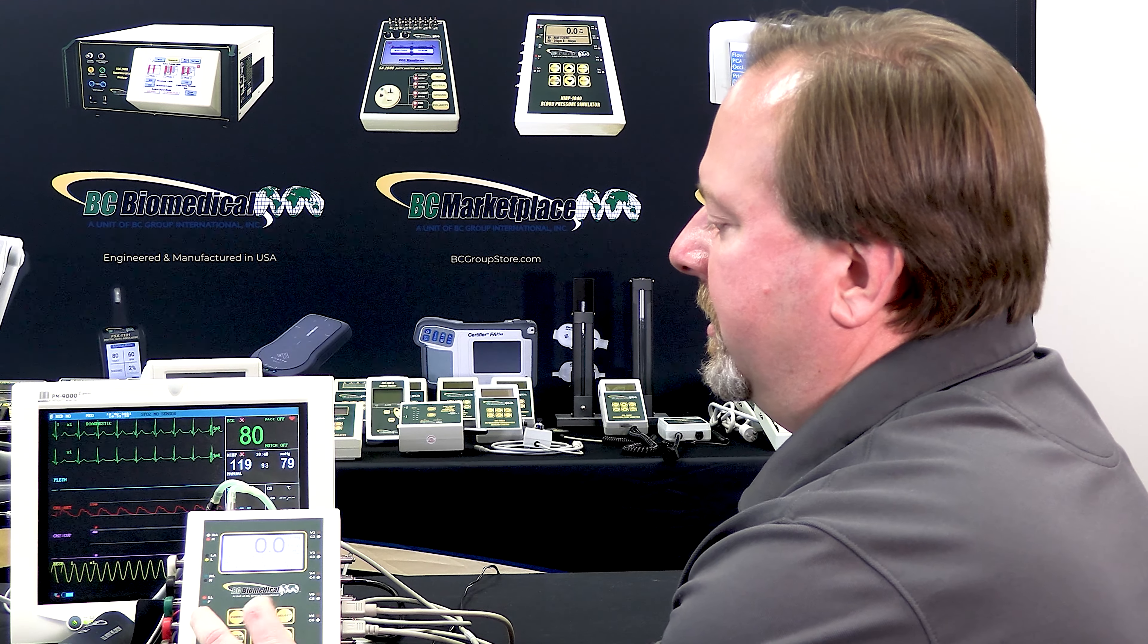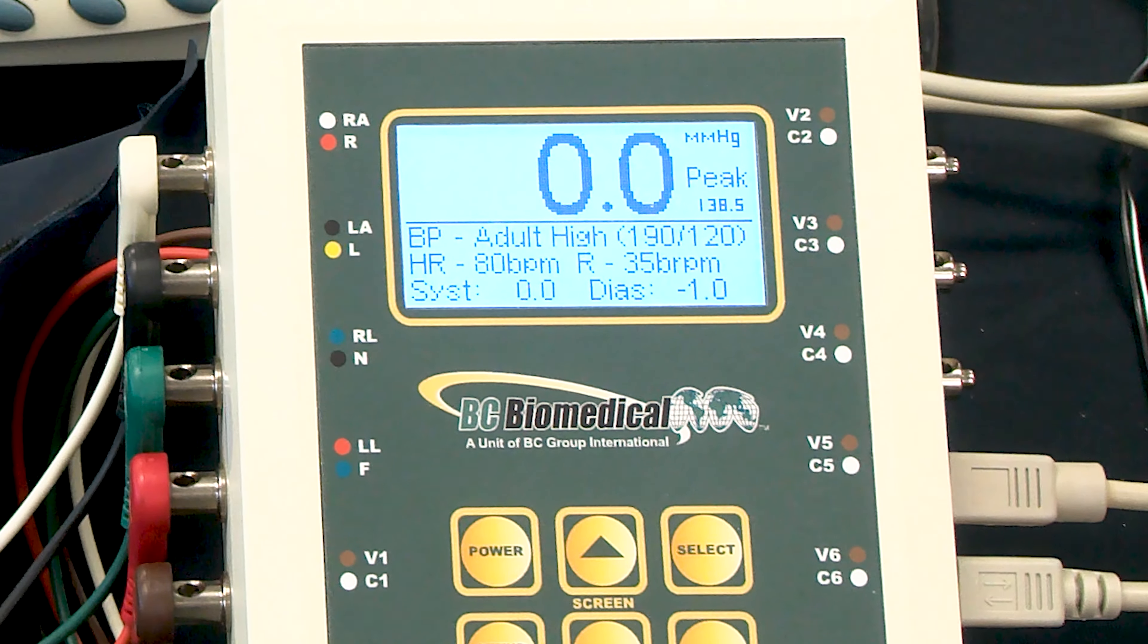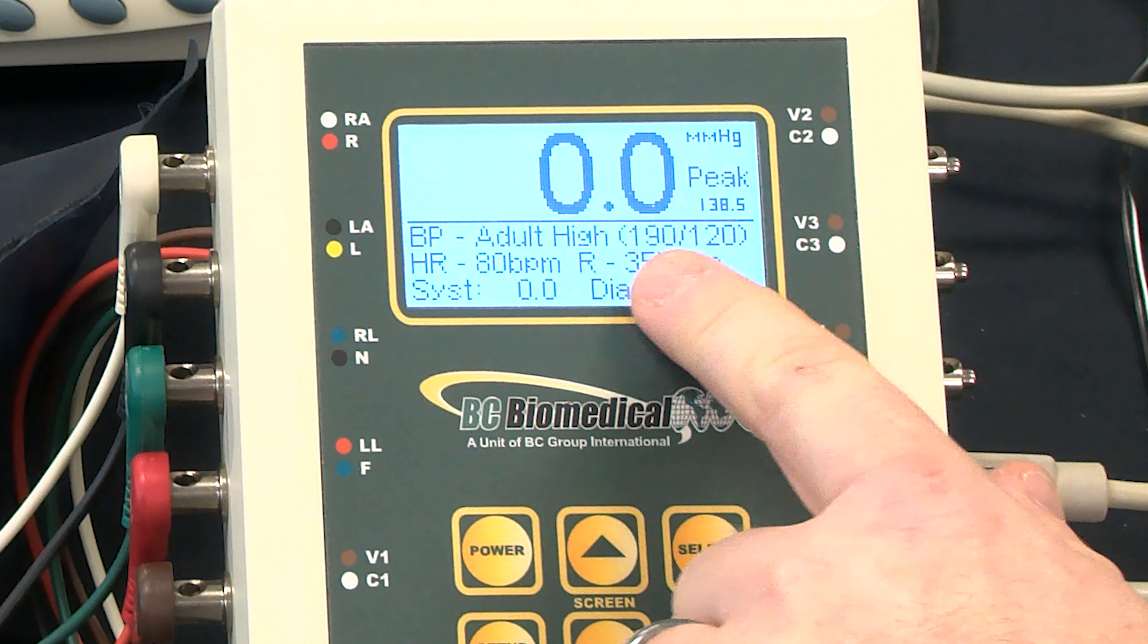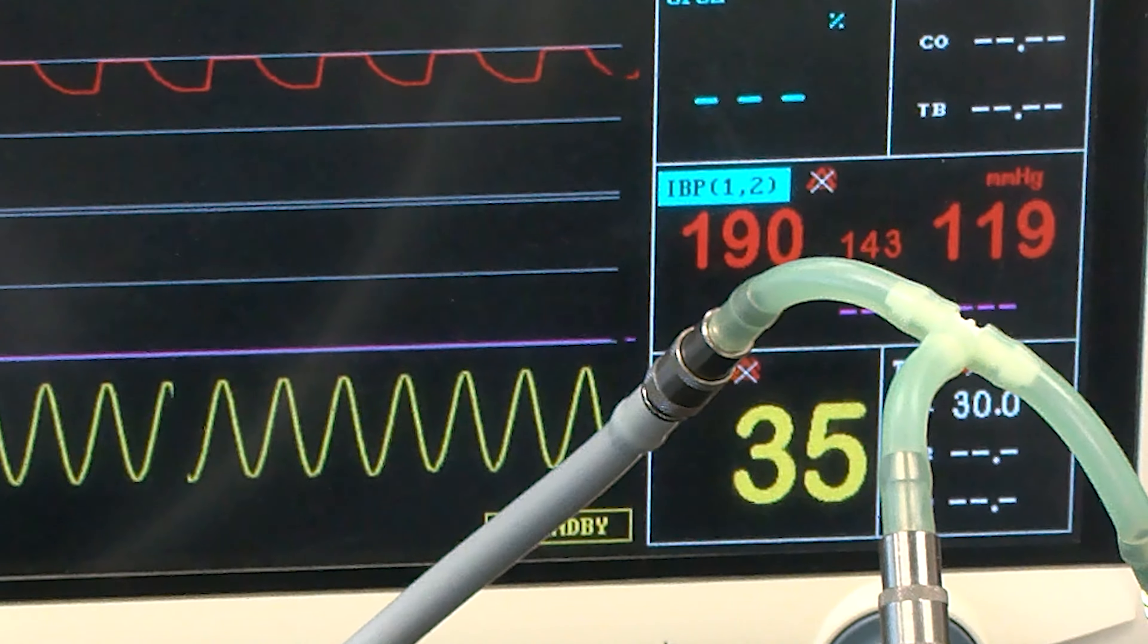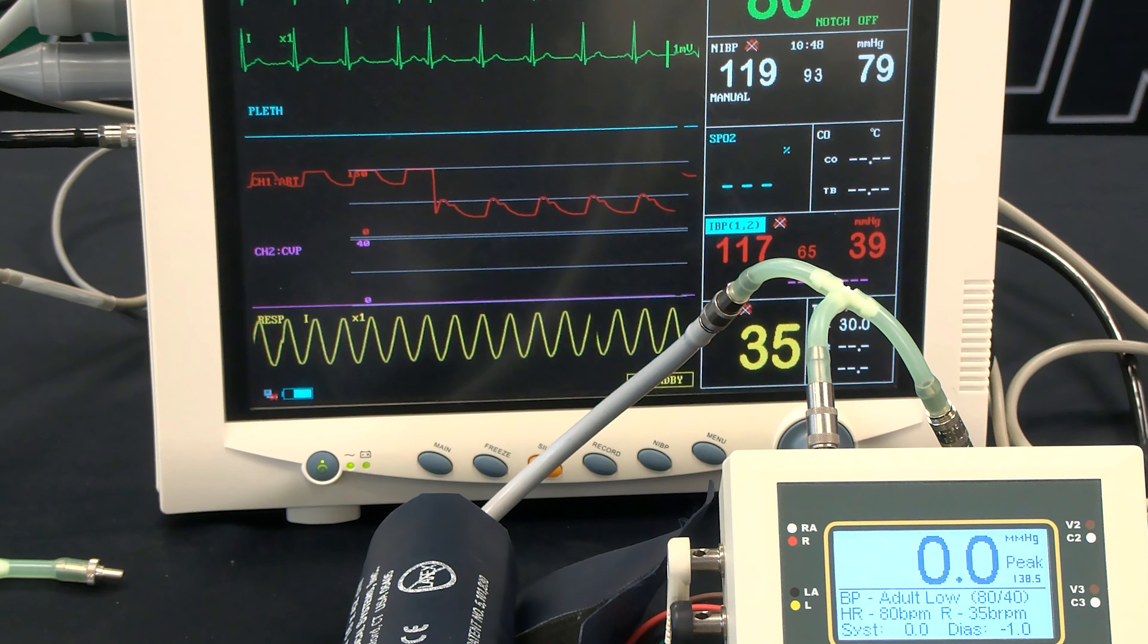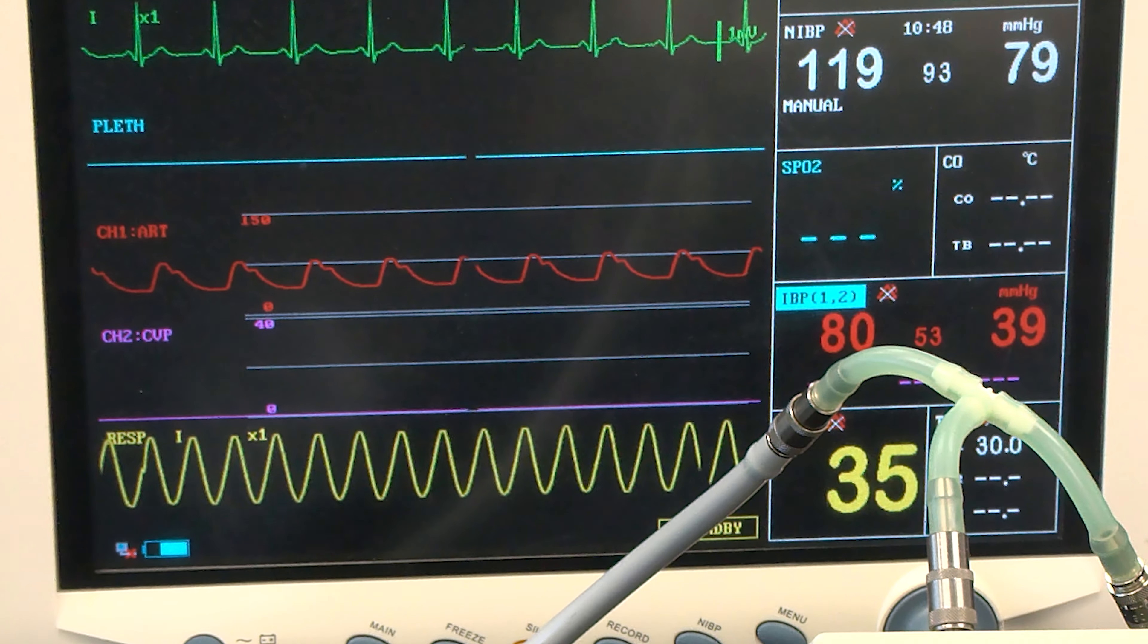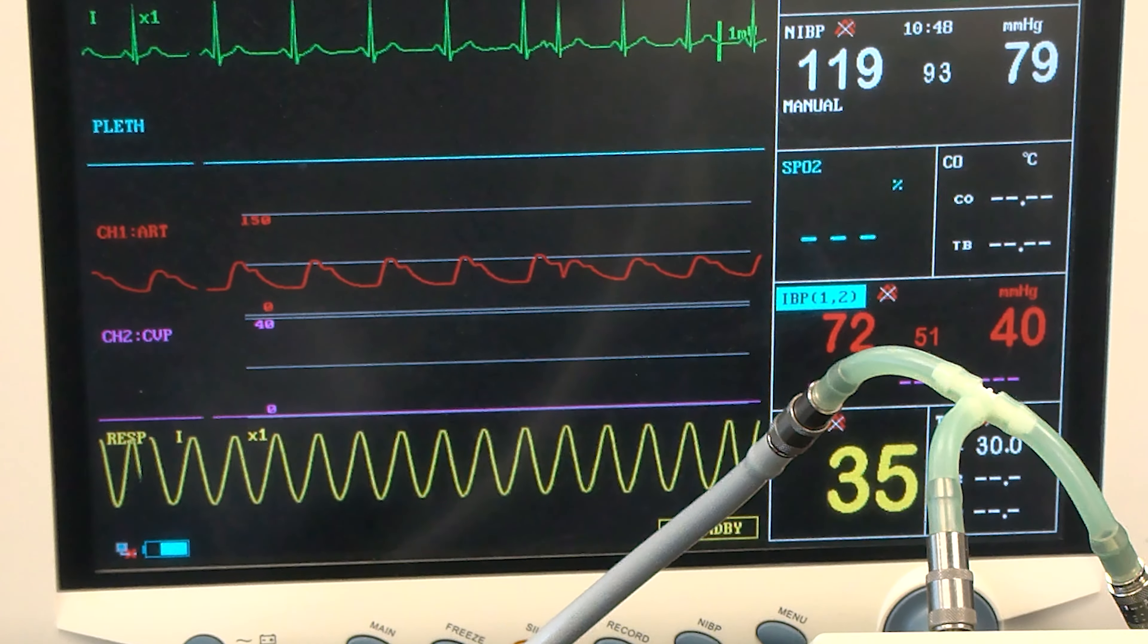We can change those dynamic settings by pressing the select button on the NIBP, and here we scrolled to adult high, and it should be 190 over 120, and we can see that reflected on the monitor here. We also have adult low, which is 80 over 40, and the monitor responds pretty quickly, showing us the correct reading there, and we also have 70 over 40.